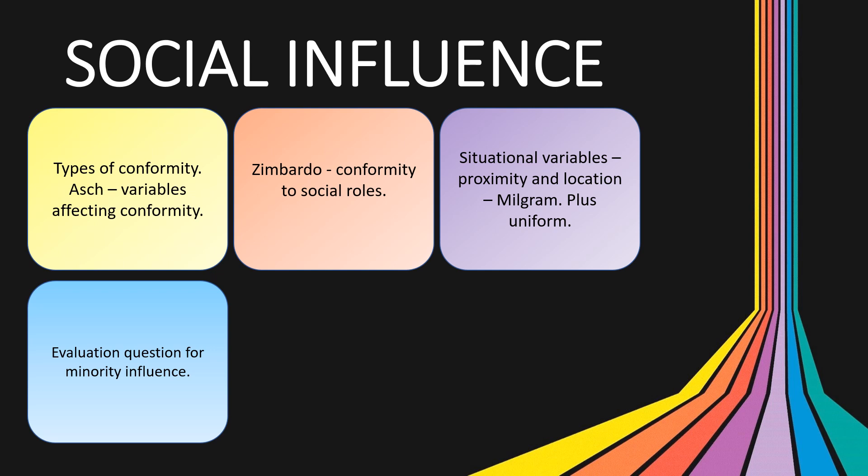Asch is an area in social influence that hasn't been mentioned at all, which is quite surprising. Be wary of an Asch question — it's likely to focus specifically on the variables affecting conformity: that is group size, task difficulty, and unanimity.